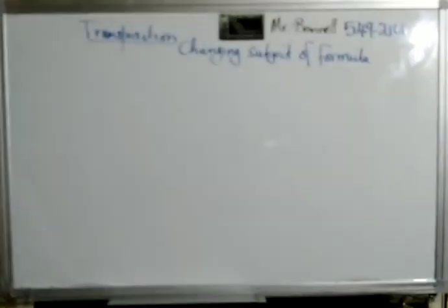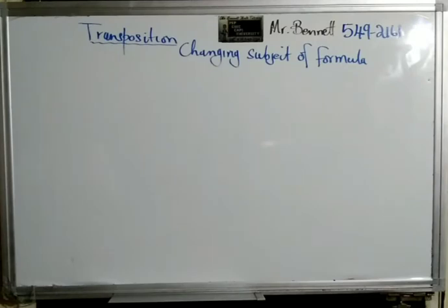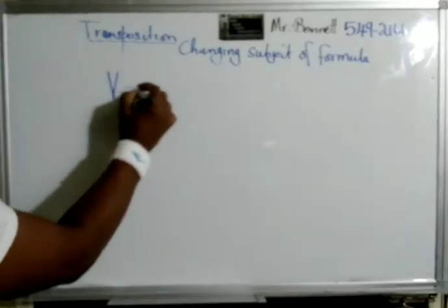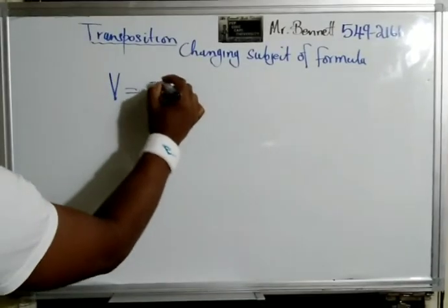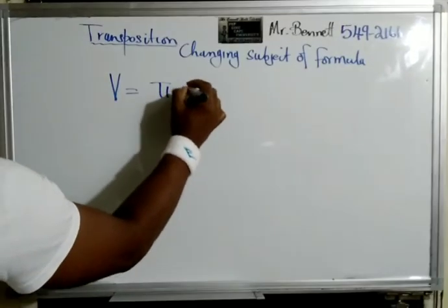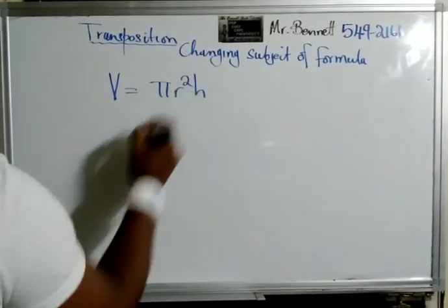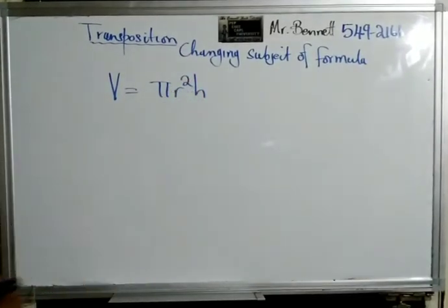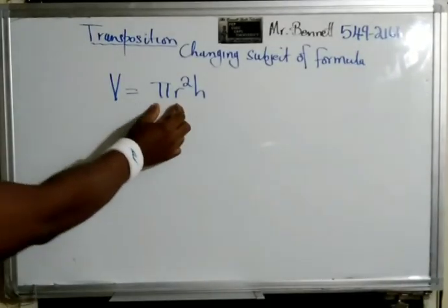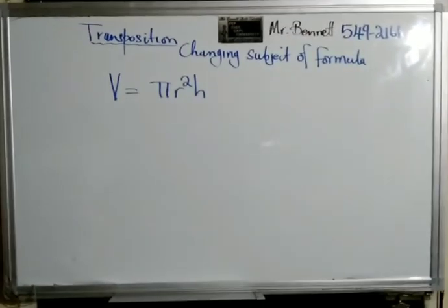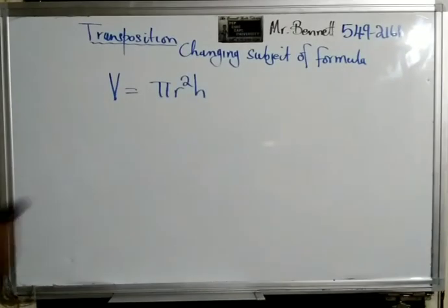All right, let us look at the volume of a cylinder. V is equal to pi r squared h — we find the area of the base times the height. But suppose they ask us to make r the subject of the formula.